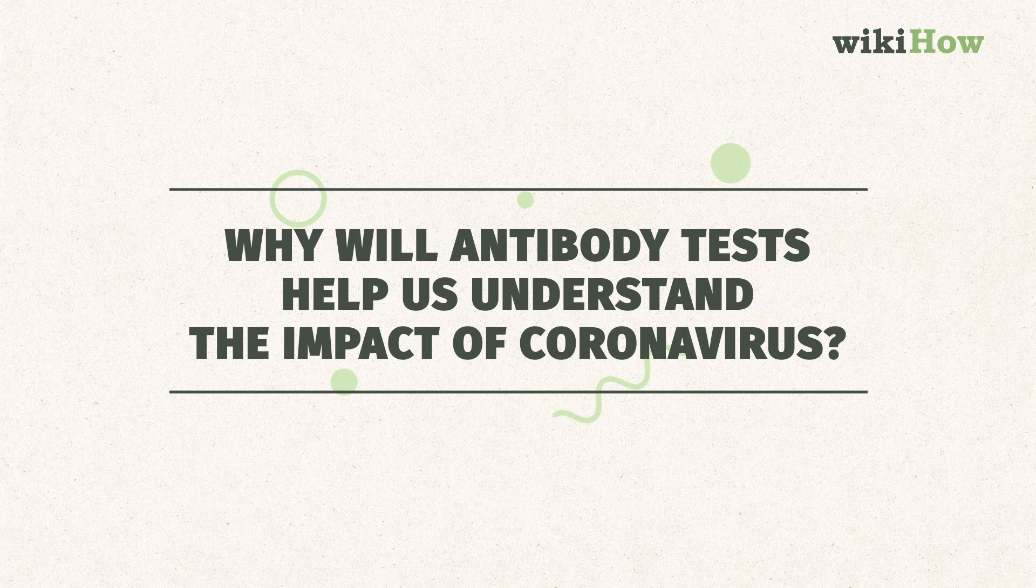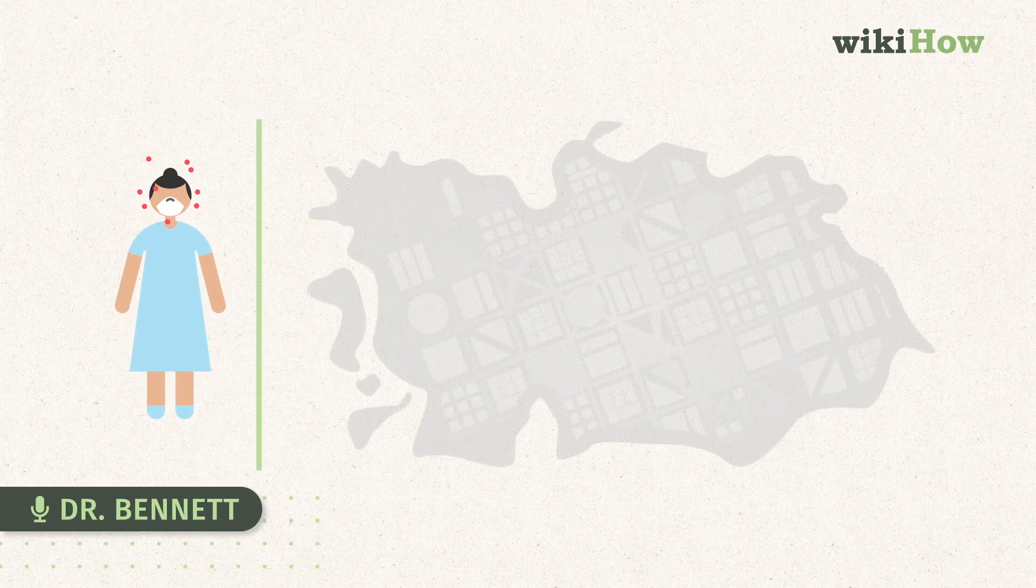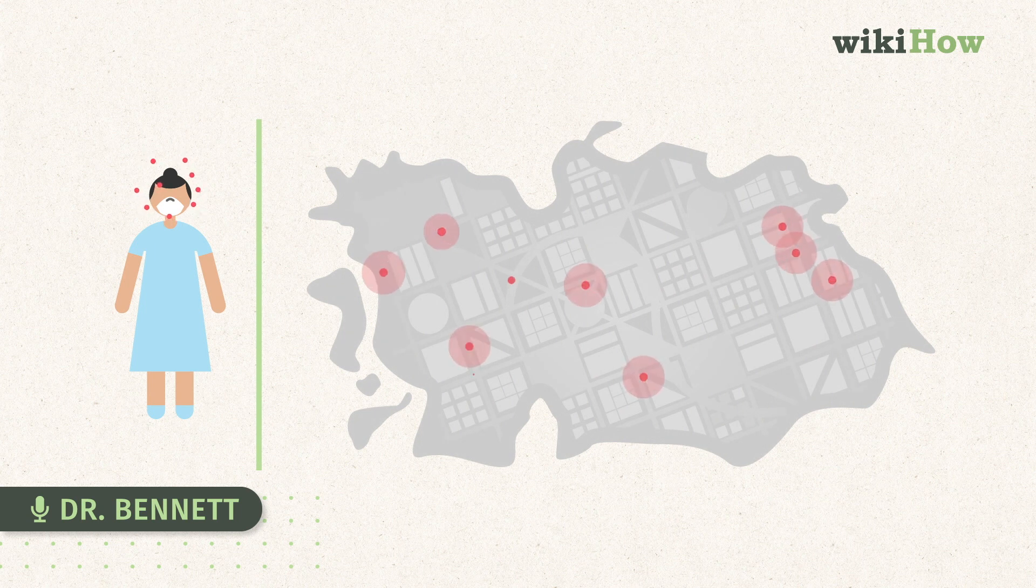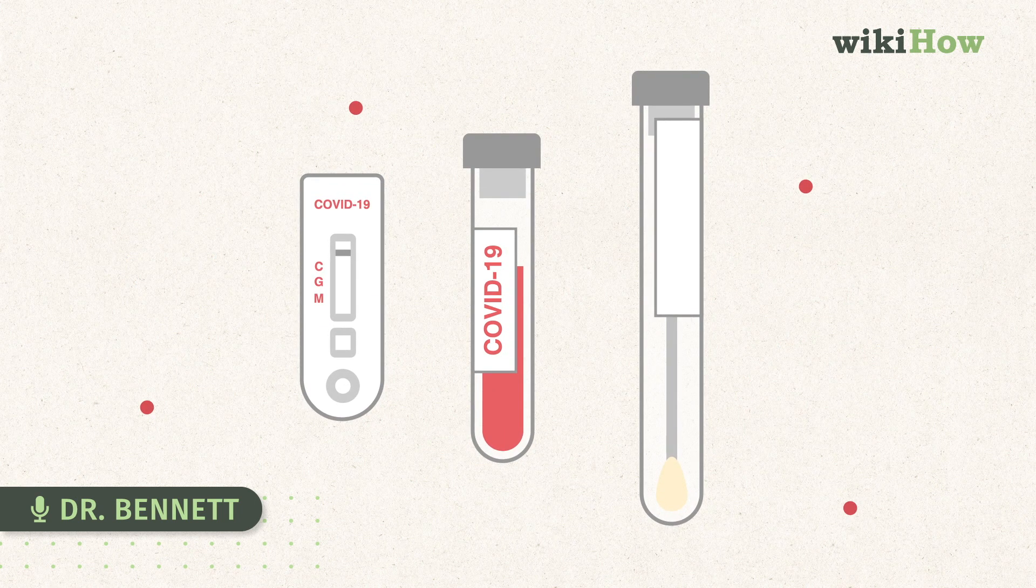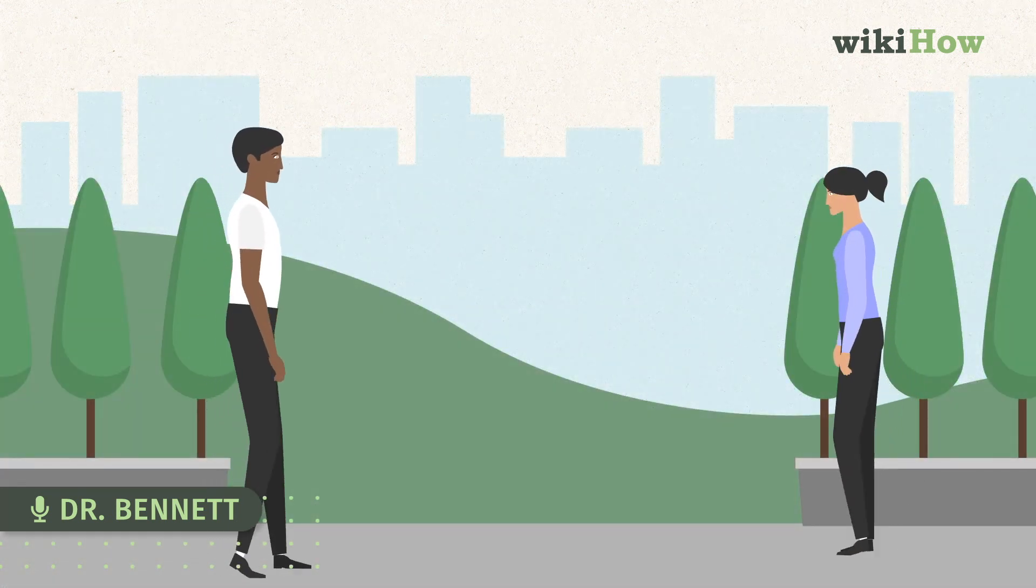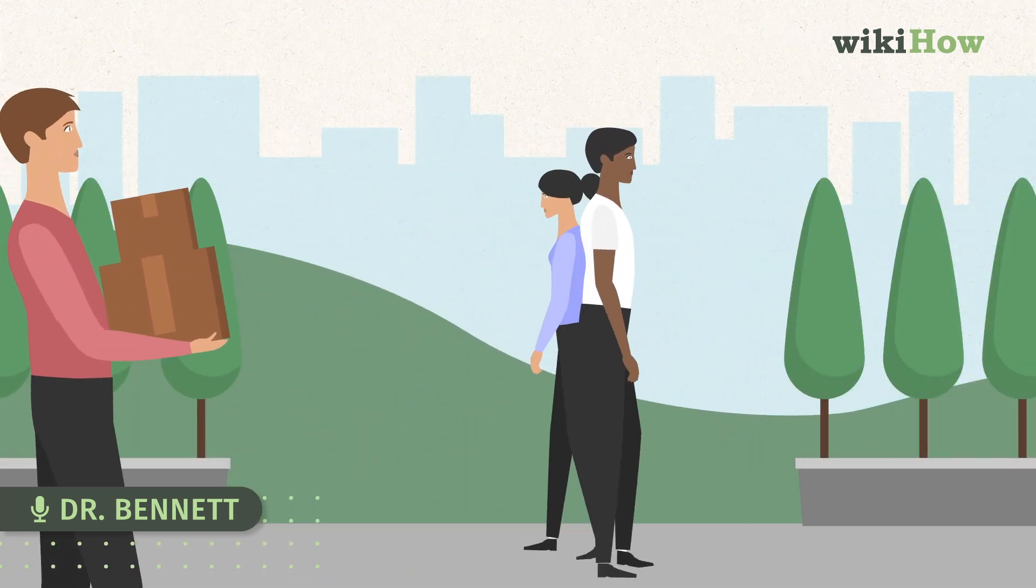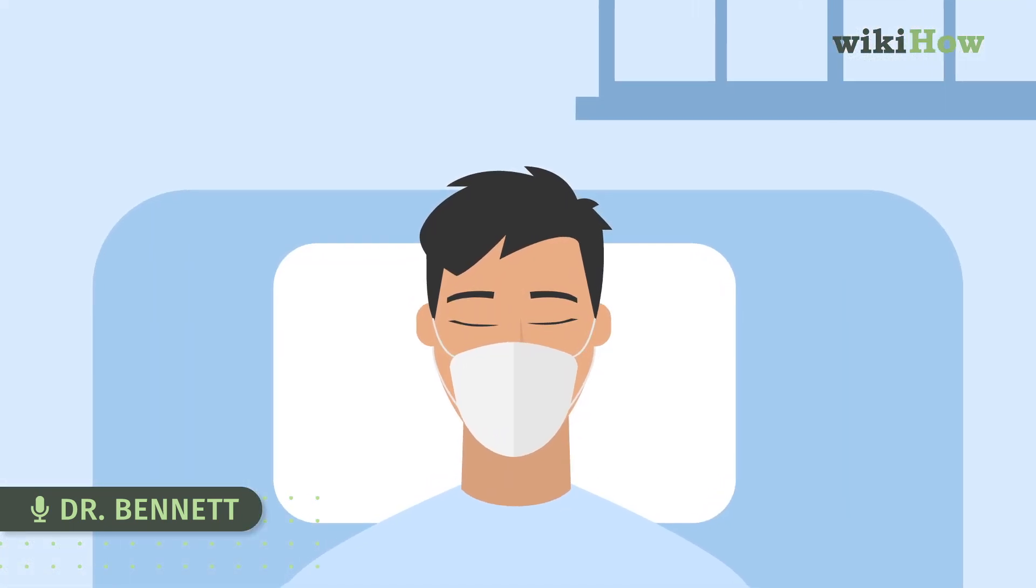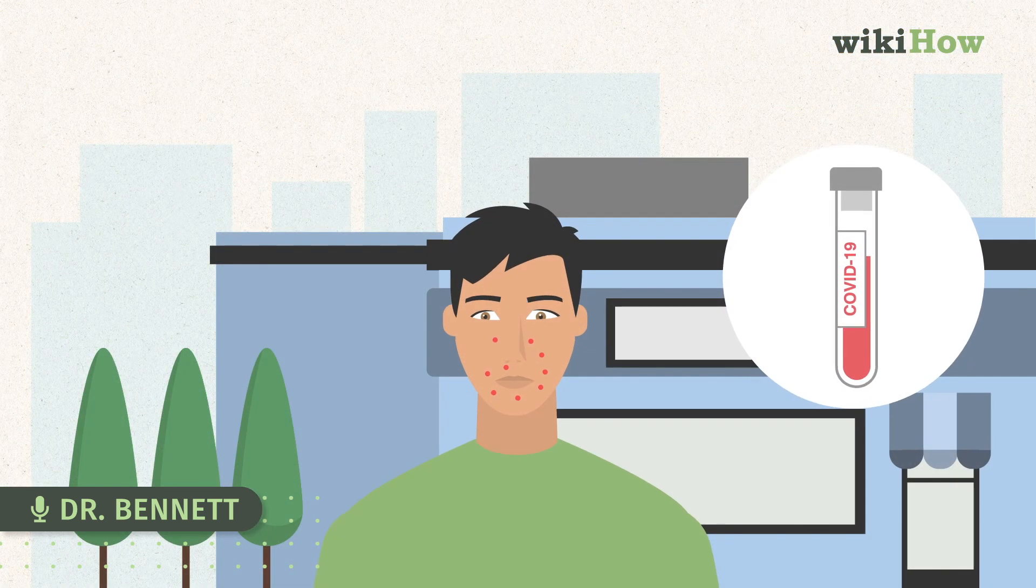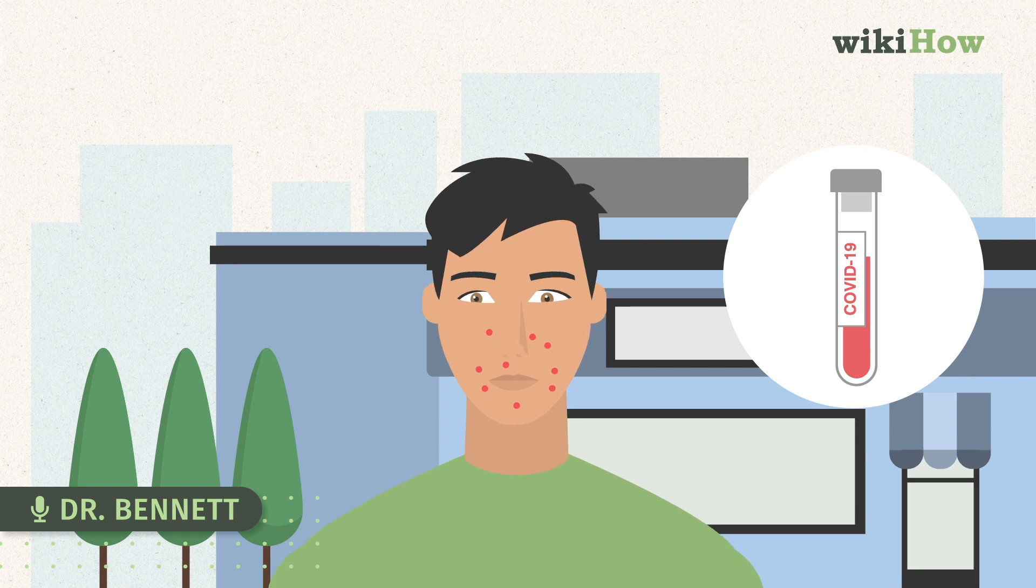Why will antibody tests help us understand the impact of coronavirus? One way to understand the true size of the number of infected people in a population is to develop a test where we can look at where the virus has been, who has been infected. This is getting away from being dependent on tests that only record the presence of active virus and actually look for the imprint of a past infection that the virus has made on our immune system.